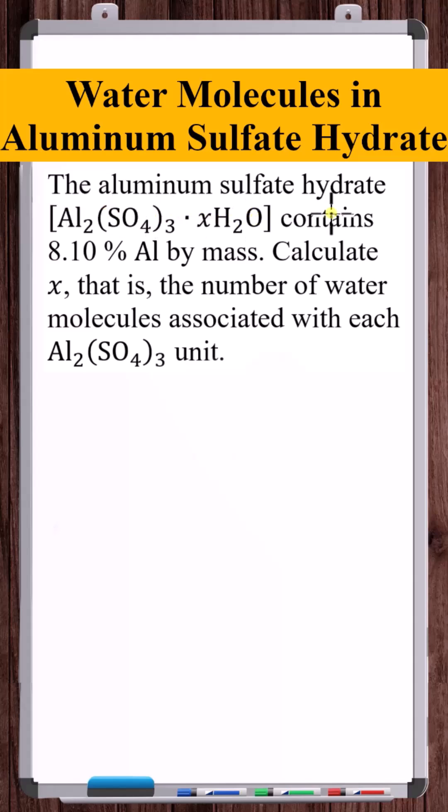The aluminum sulfate hydrate contains 8.1% aluminum by mass. Calculate X, that is the number of water molecules associated with each aluminum sulfate unit.